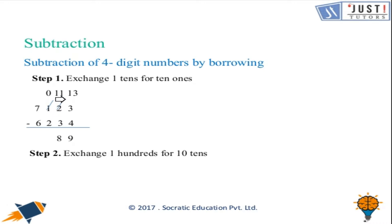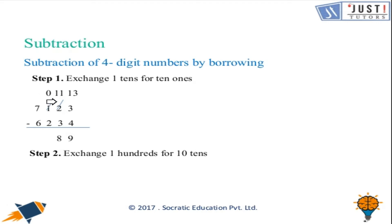Again, we can't take away three from one in the tens column, so we borrow from the hundreds column. We exchange one hundred for ten tens, so the hundreds digit becomes zero and the tens digit one becomes eleven. Eleven take away three gives us eight.